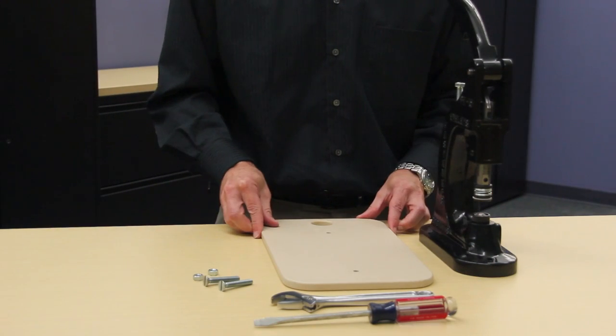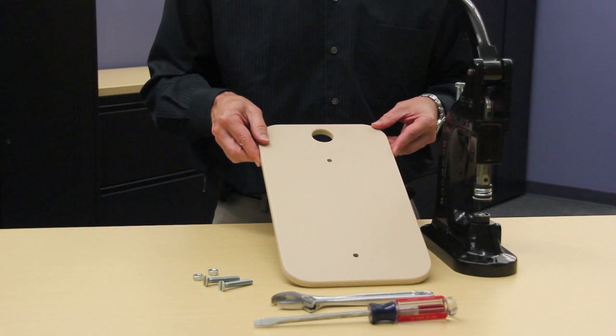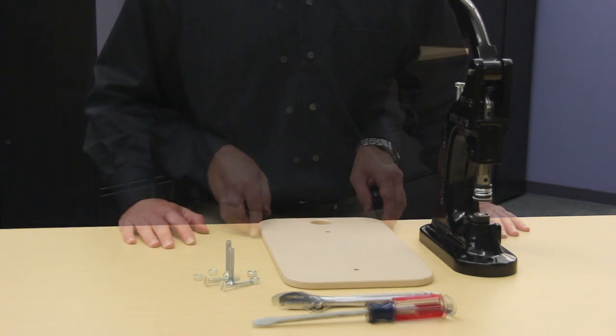Advantage also offers an optional press platform that you can purchase for the aluminum hand press. This product can be beneficial if a person needs more stability when applying their grommets.